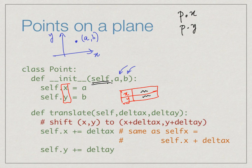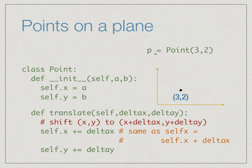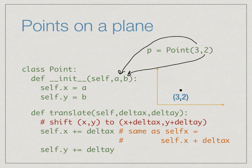In init, which takes two arguments, we always insert self as a third argument. For instance, if we say p equals Point(3, 2), then 3 is passed as a and 2 as b, setting up the point with self dot x equal to 3 and self dot y equal to 2. Here is a slightly different function — translate — which takes a point and shifts it to x plus delta x and y plus delta y.